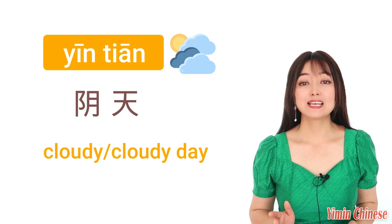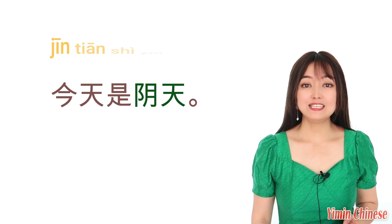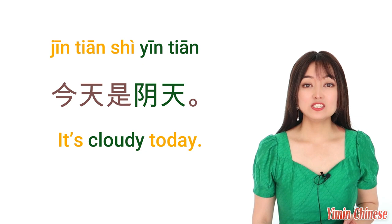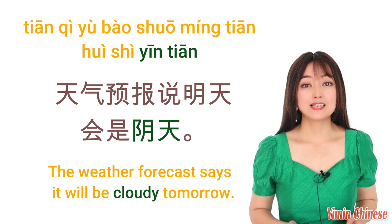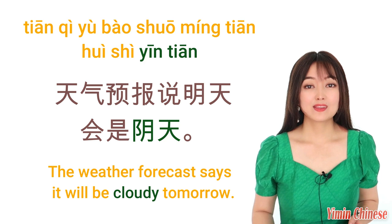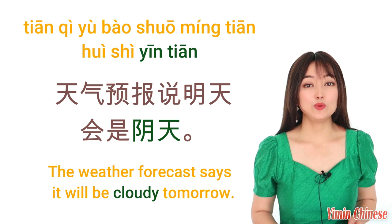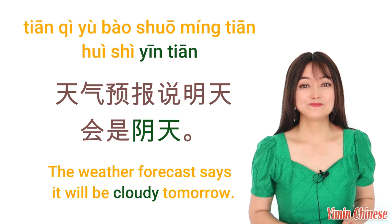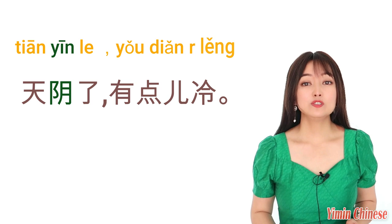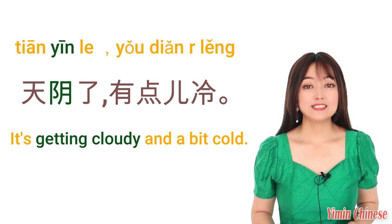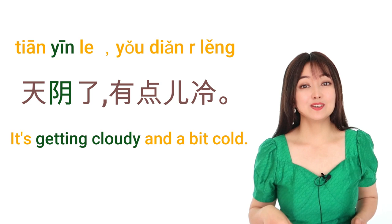So cloudy day is 阴天。比如说，今天是阴天。It's cloudy today. 今天是阴天。或者天气预报说明天会是阴天。The weather forecast says it will be cloudy tomorrow. 天气预报 is weather forecast. Still, the word 阴 also can be a verb meaning become cloudy. 比如说，天阴了，有点冷。It's getting cloudy and it's a little cold.